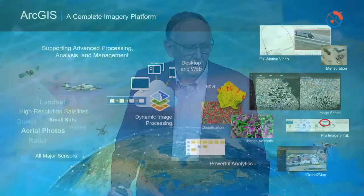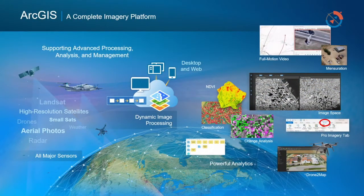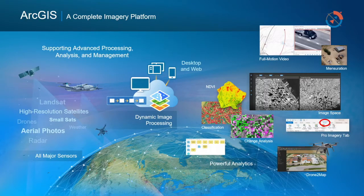We also consider ArcGIS is now a complete imagery platform with three major components. First, support for all leading sensors: big satellites, small satellites, air photos, multi-dimensional data, radar, and drones.